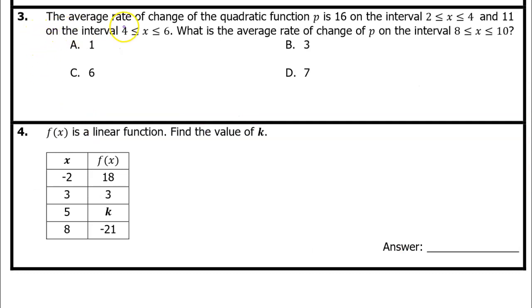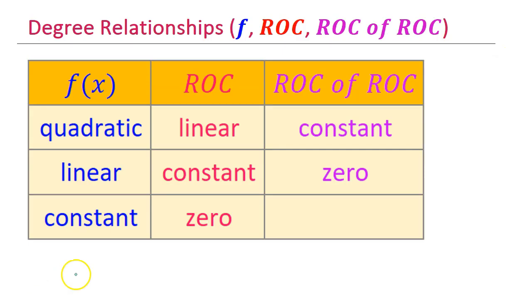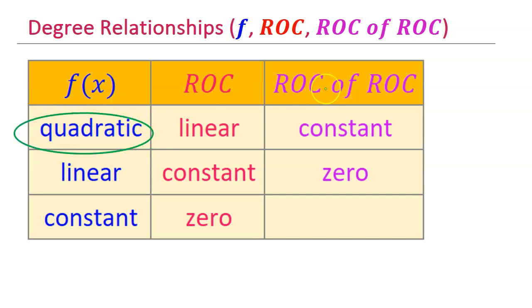Number 3. The average rate of change of the quadratic function p is 16 on the interval from 2 to 4, and 11 on the interval from 4 to 6. What is the average rate of change of p on the interval from 8 to 10? This is another chart I would like you to memorize — pause the screen and write this down. For this problem, focus on the part that says when f of x is quadratic, then the rate of change of the rate of change is constant.